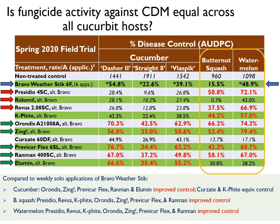For butternut squash and watermelon, the application of Bravo alone was only effective in watermelon, but not on squash. Similar to cucumber, rotations that included Orondis, Zing, Previcure Flex, and Ranman improved disease control compared to Bravo alone, while adding Illumin statistically only gave equivalent control. Unlike cucumber, rotations that included Presidio, Revus, and Caefite performed statistically better than Bravo alone, while Kirzate actually reduced disease control compared to Bravo alone in both squash and watermelon. The rotation with Ridomil reduced disease control in butternut squash, but gave equivalent control to Bravo alone in watermelon.